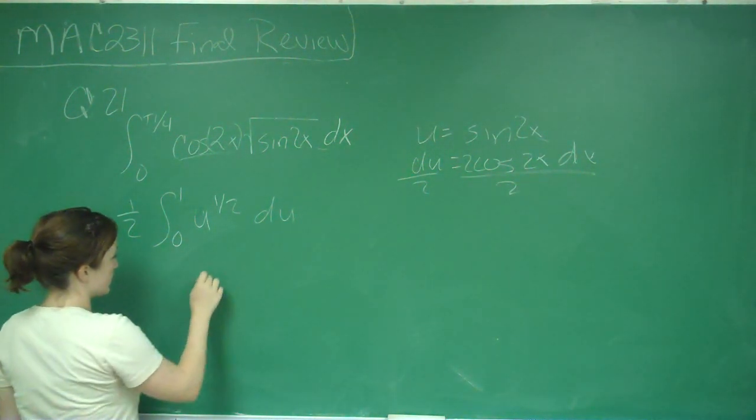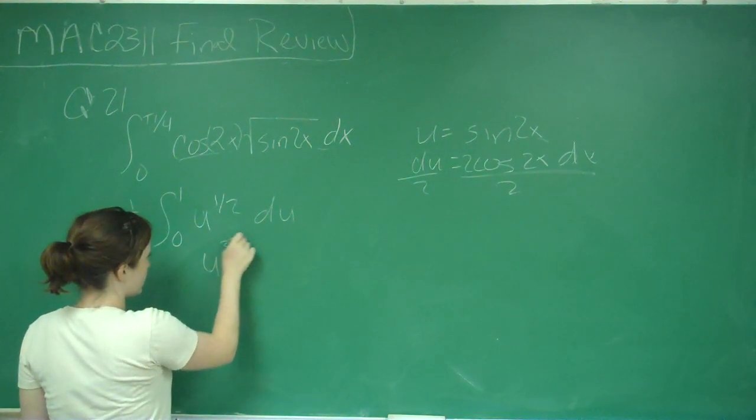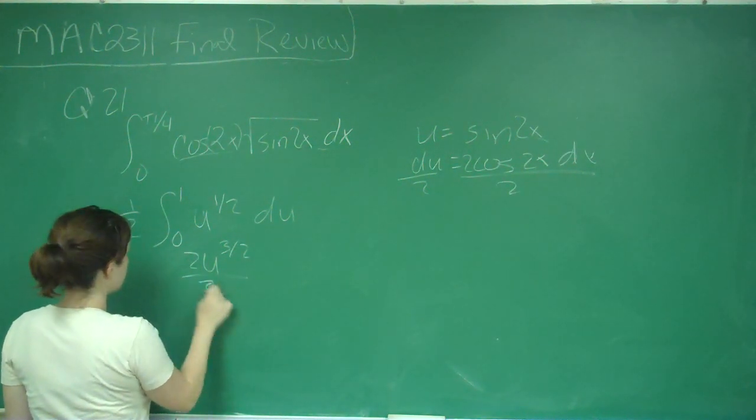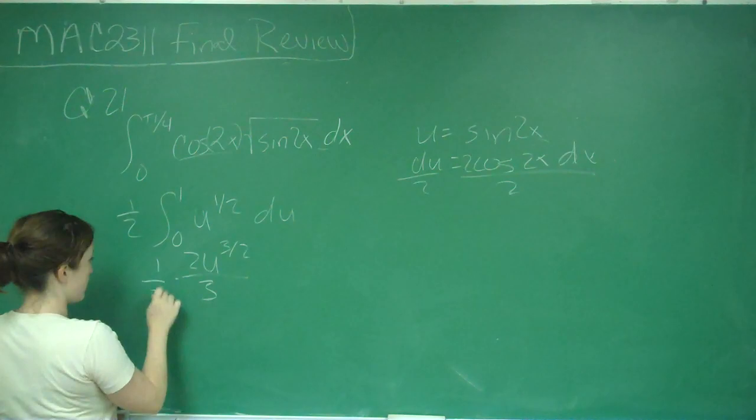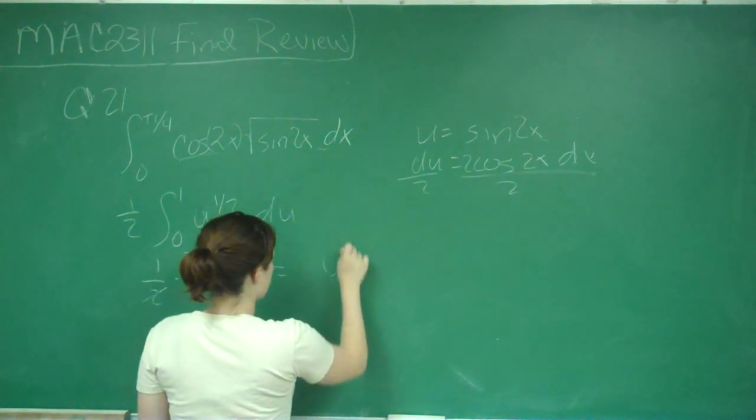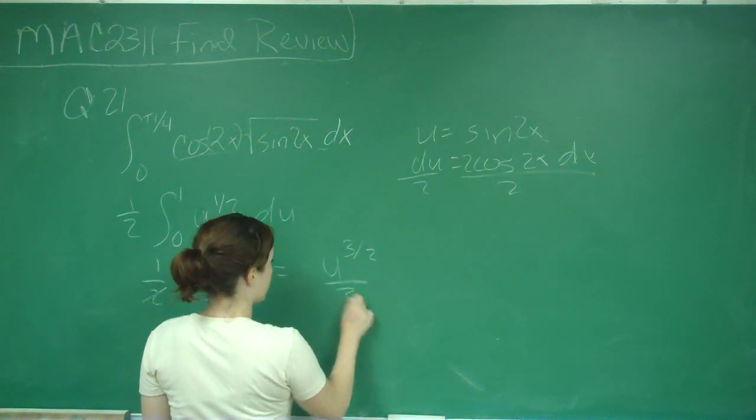So then we just do the integral as we normally do. So that becomes u to the 3 half times 2 thirds times 1 half. Those all cancel out. So we get u to the 3 halves over 3.